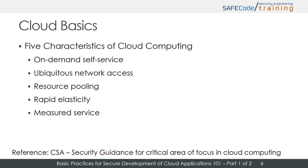Second, ubiquitous network access — the accessibility to the cloud service is provided from anywhere using any available network by using some sort of client. Third, resource pooling — the resources of the cloud are pooled to meet the demand of customers. Resources can be assigned, reassigned, allocated, and deallocated as required. The cloud consumer is not aware of this process and does not know the location of the computing resources. Nevertheless, it is possible to specify a location if execution is needed in a specific country, city, or region.